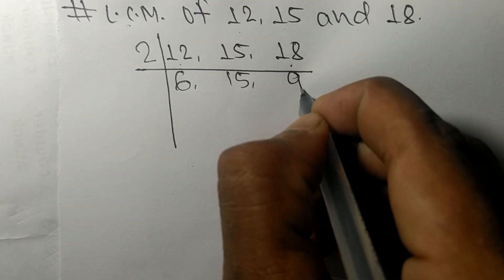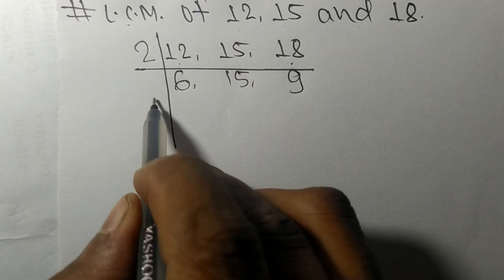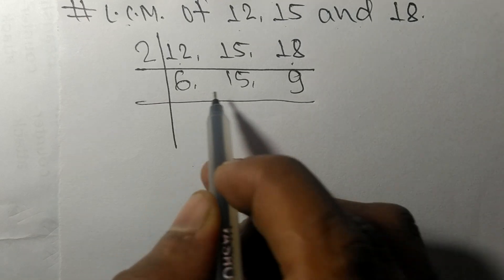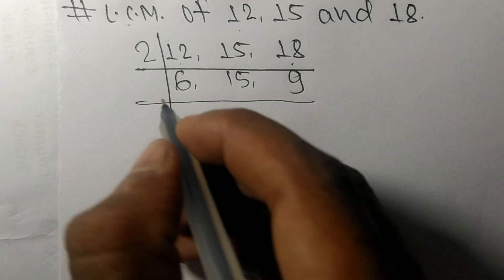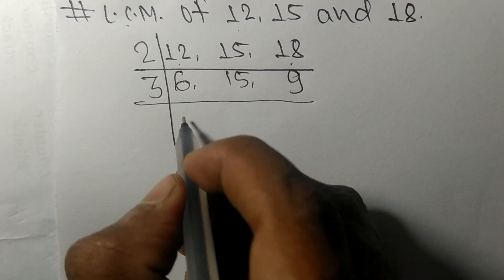which are exactly divisible by 3. 3 times 2 means 6, 3 times 5 means 15, 3 times 3 means 9. So now we got 2, 5,